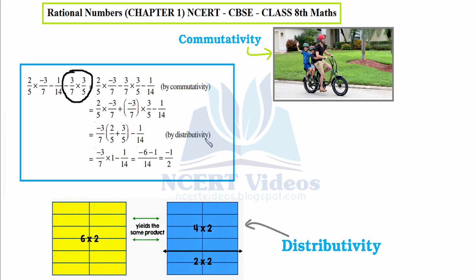Now using distributivity, we see −3/7 is common in two terms, so we take it out as a factor: −3/7 × (2/5 + 3/5) − 1/14. We solve inside the bracket: 2/5 + 3/5 = 1. Then by taking LCM we simplify −3/7 × 1 − 1/14, which gives −3/7 − 1/14 = −6/14 − 1/14 = −7/14 = −1/2. This was an example to illustrate commutativity and distributivity.